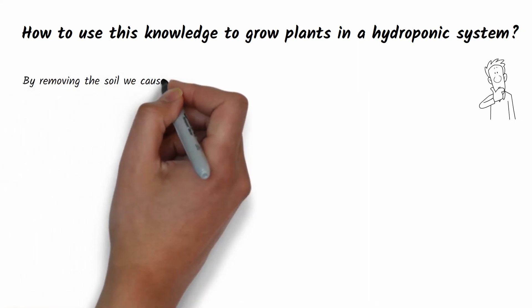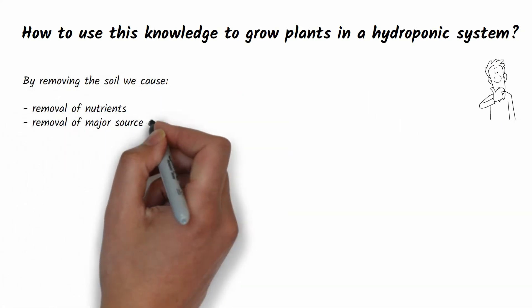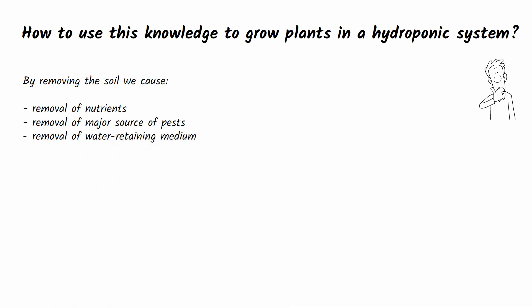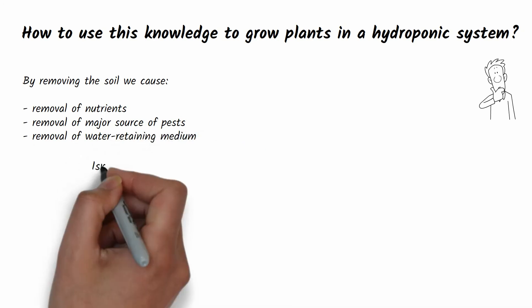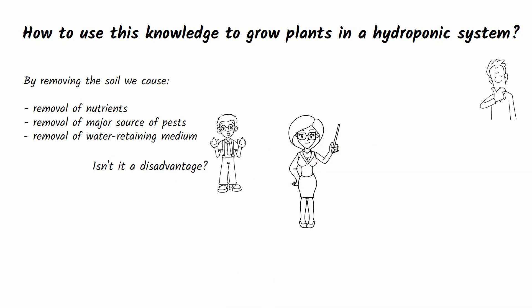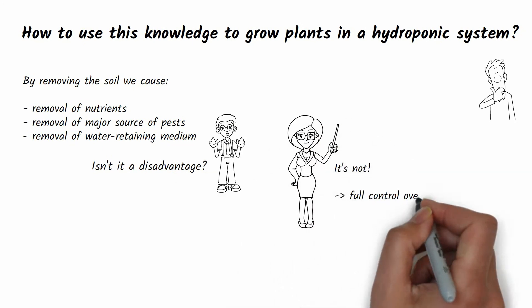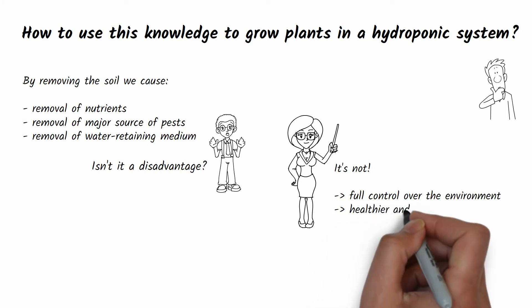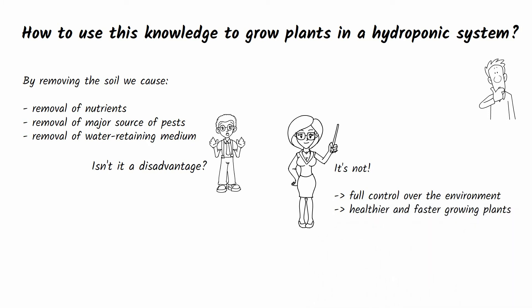How to use this knowledge to grow plants in a hydroponic system? By removing the soil, we take away the plant's nutrients, a major source of pests, and a water-retaining medium. This might seem like a disadvantage, but in fact it is the opposite. We gain full control over the environment and have the ability to grow healthier and faster growing plants.